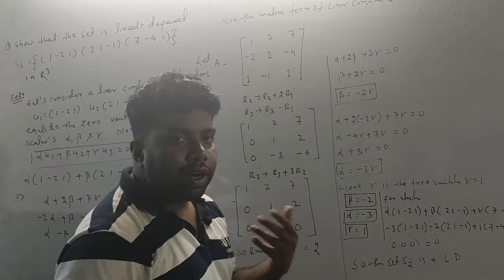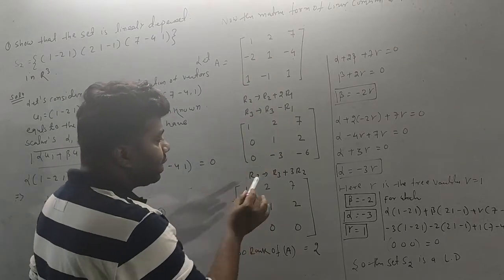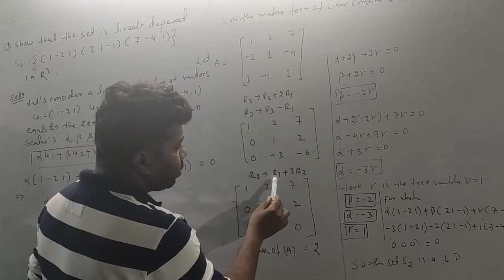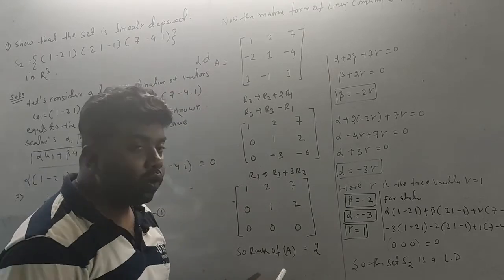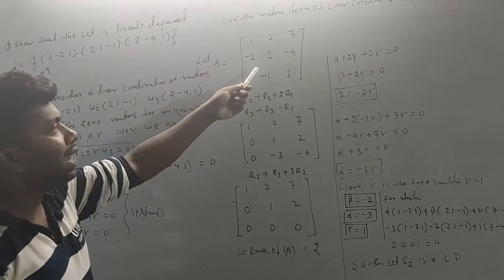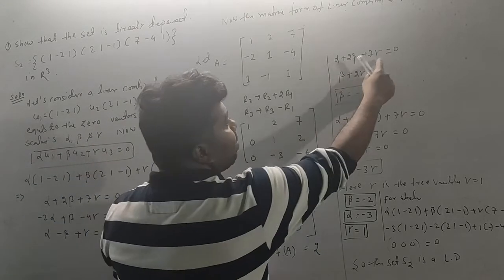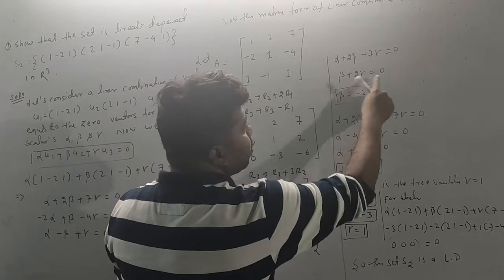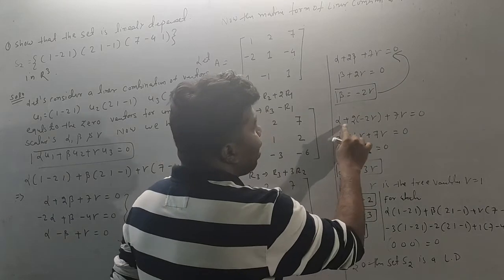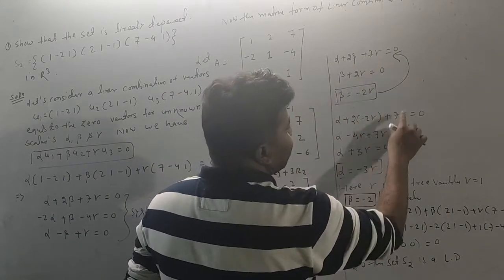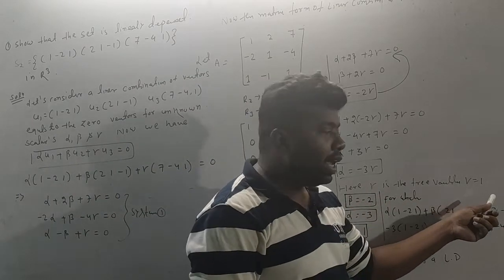Performing row reduction, we bring ones and zeros into position using row operations. From the reduced system: alpha plus 2·beta plus 7·gamma equals zero. Substituting, we find beta equals minus 2·gamma. Then alpha plus 2·(minus 2·gamma) plus 7·gamma equals zero, which simplifies further. Gamma is identified as the free variable, so gamma equals 1.